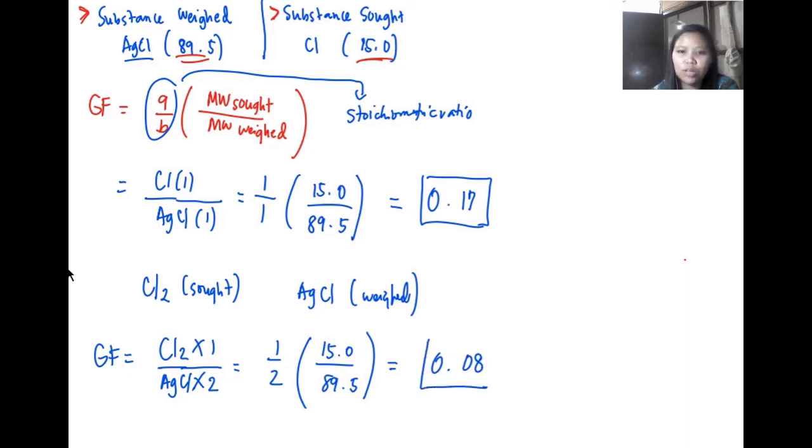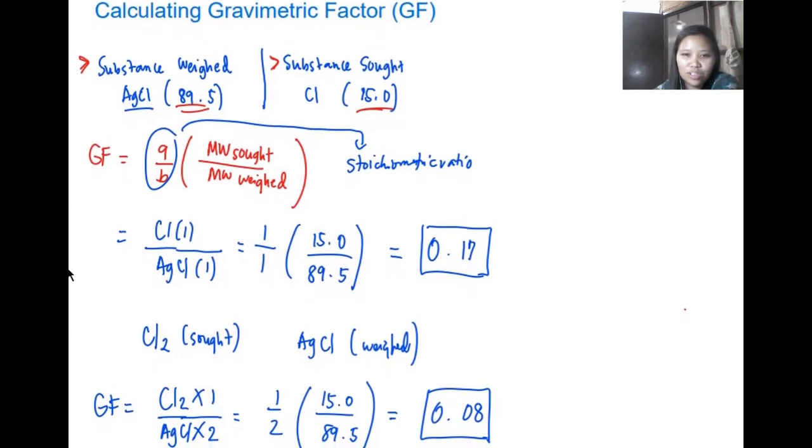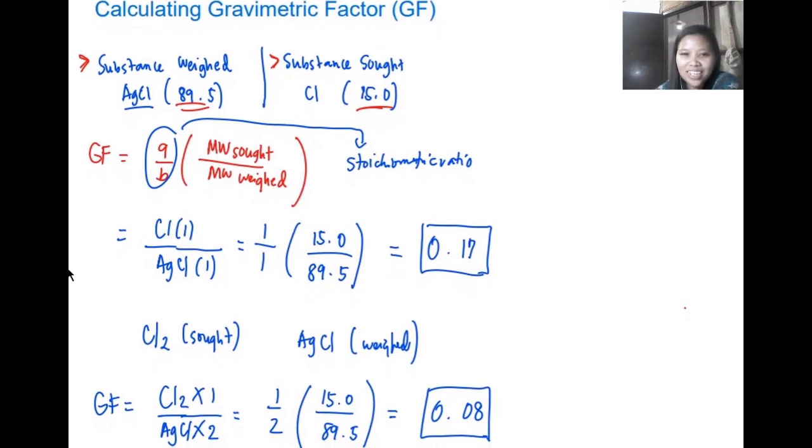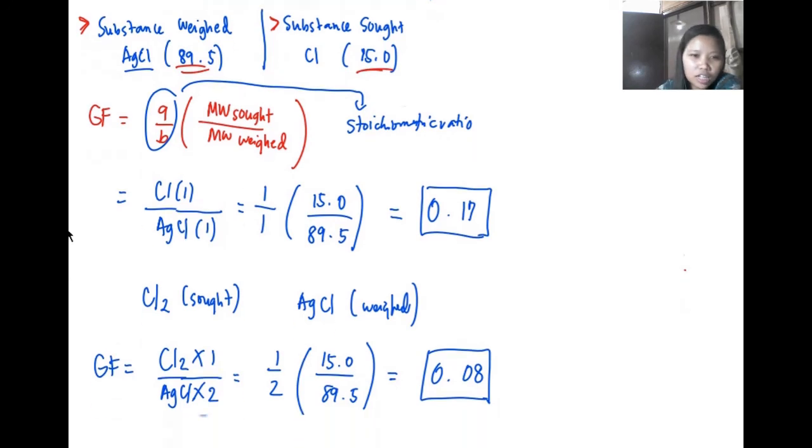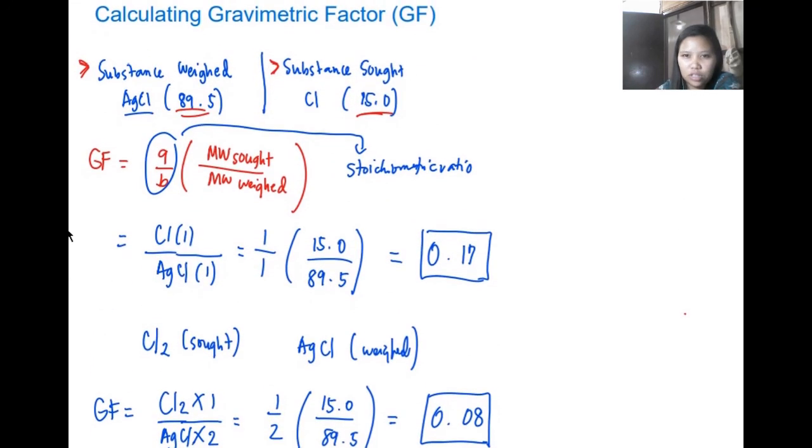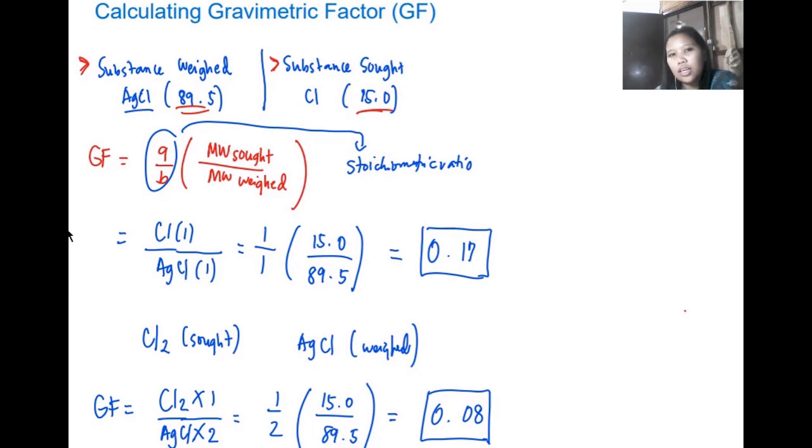So that's how easy it is to calculate our gravimetric factors or GF. Very easy when the top and bottom are equal, and also when they're not equal - that is just the process of our GF calculation. Thank you so much guys, I hope you learned something from it. If you have questions you can just comment in the comment section below. Thank you and God bless.